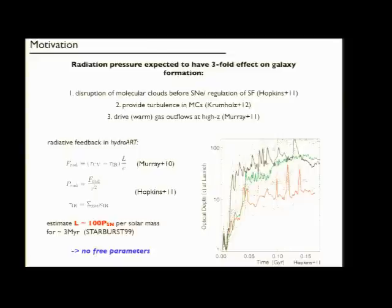This optical depth is supposed to be proportional to the column density of the gas, and we can easily estimate the luminosity in our simulations to be about a hundred times the power deposited by supernovae. This effect only happens for the first about three million years and then it dies off.